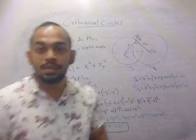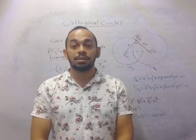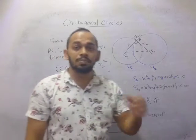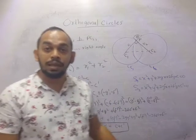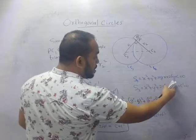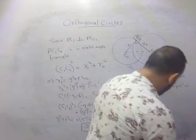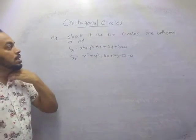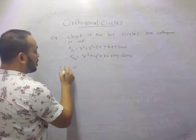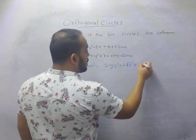If this condition is met - 2gg' + 2ff' = c + c' - that means the two circles are orthogonal. This is the condition you have to memorize. Let's check if the two given circles are orthogonal or not. If they are orthogonal, this condition must be satisfied: 2gg' + 2ff' = c + c'.